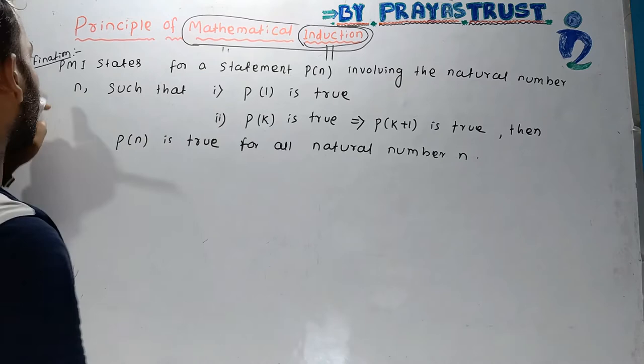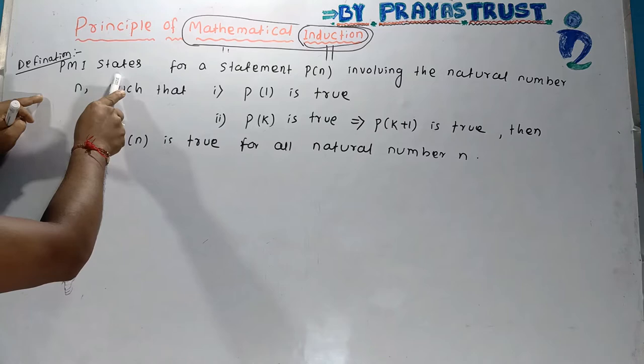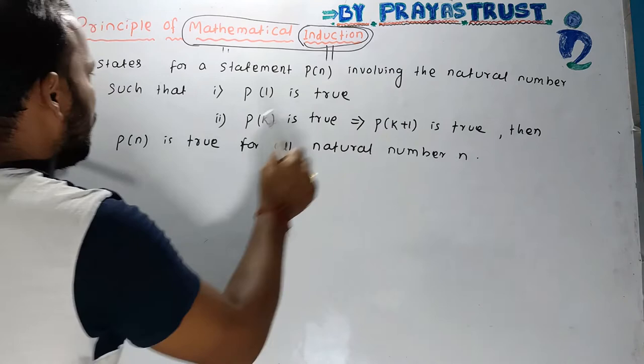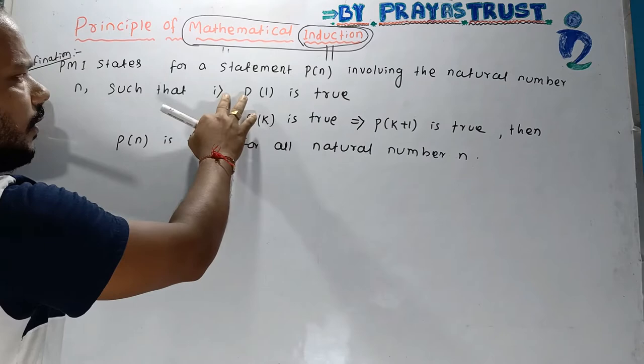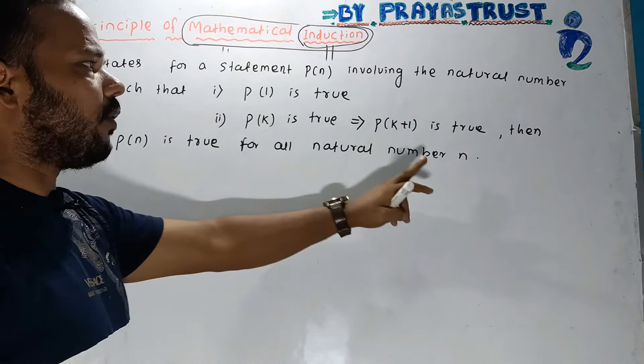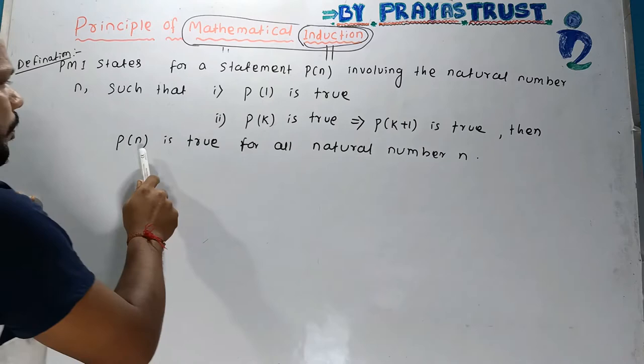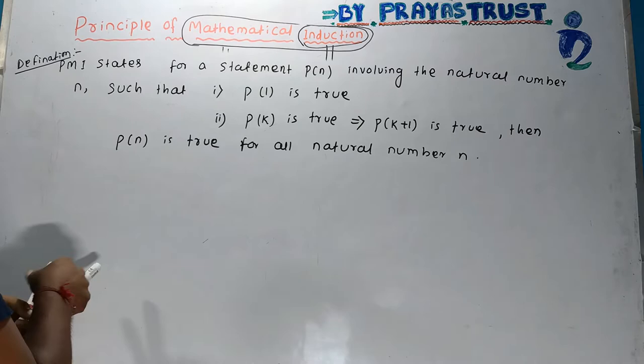The Principle of Mathematical Induction states: for a statement P(n) involving natural numbers, if (1) P(1) is true, and (2) P(k) is true implies P(k+1) is true, then P(n) is true for all natural numbers n.